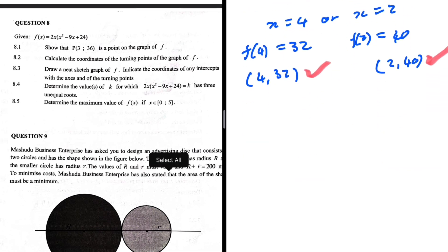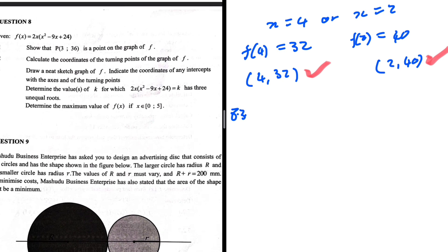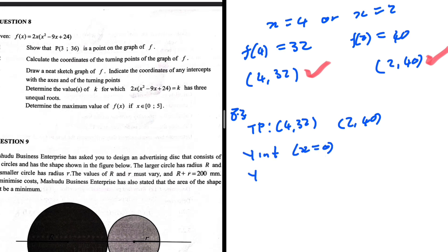Question 8.3: sketch the graph of f, indicating intercepts and turning points. Gathering information — turning points are (4, 32) and (2, 40). For the y-intercept we let x = 0; substituting zero into f(x) = 2x(x² - 9x + 24) everything cancels out and we get y = 0, so the y-intercept is at the origin (0, 0).